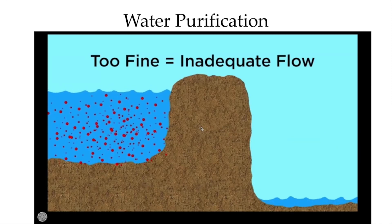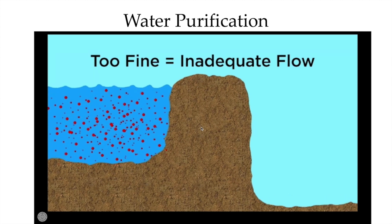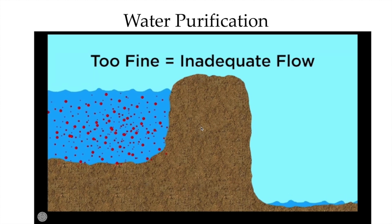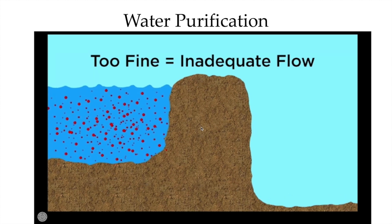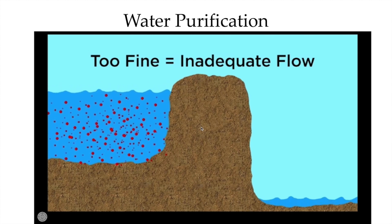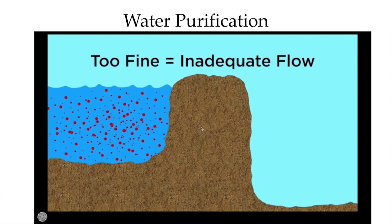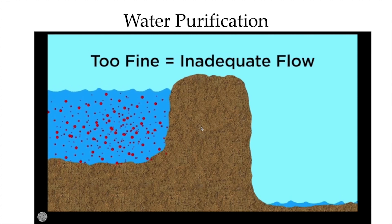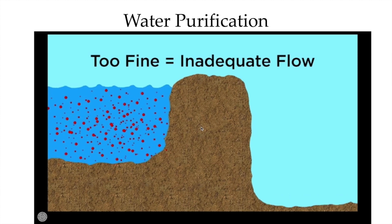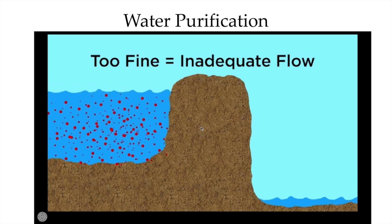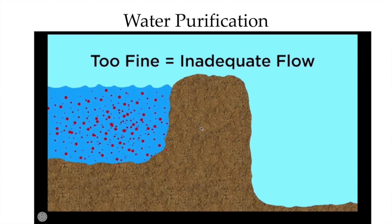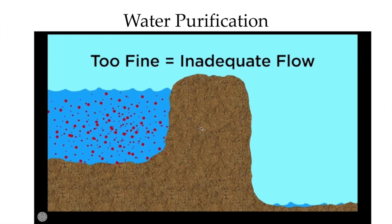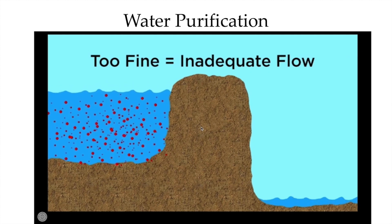However, if you have a soil with too fine a texture — things like a high clay content — you won't have a good purification system because you have inadequate flow. Water can't even get through the soil, so it's not going to adhere to or take up any of those nutrients. In areas like this you might be prone to flooding.